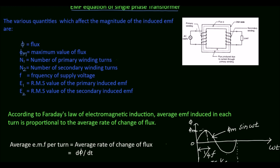A transformer has two windings: one is the primary winding and another one is the secondary winding. The primary winding has N1 number of turns and the secondary winding has N2 number of turns. The primary winding is connected to the supply and the secondary winding is connected to the load. Both primary and secondary windings are placed on a common magnetic core.